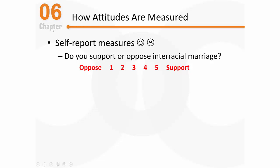The bottom line is these types of measures can be reactive and there can be problems with them as a result. It's also possible that they can be a little too simplistic — how much can I really assess how someone feels about interracial marriage just by asking them a question or two? Responses can also be biased based on the way I ask the question.